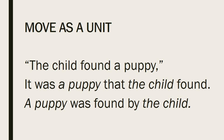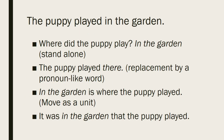A third test of constituency is the move-as-a-unit test. If a group of words can be moved, they form a constituent. Comparing to 'the child found a puppy,' we see that certain elements have moved: 'It was a puppy that the child found' and 'A puppy was found by the child.' In the first example, the constituent 'a puppy' has moved from its position following 'found.' In the second example, the positions of 'a puppy' and 'the child' have been changed. In all such rearrangements, the constituents 'a puppy' and 'the child' remain intact, while 'found a' does not remain intact because it is not a constituent. In the sentence 'the child found a puppy,' the natural groupings or constituents are the subject 'the child,' the predicate 'found a puppy,' and the direct object 'a puppy.'